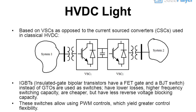HVDC Light: based on VSCs as opposed to the current sourced converters used in classical HVDC. IGBTs (insulated gate bipolar transistors) — which have a FET gate and a BJT switch — are used instead of GTOs as switches. IGBTs have lower losses, higher frequency switching capacity, and are cheaper, but have less reverse voltage blocking capacity. These switches allow using PWM controls, which yield greater control flexibility.